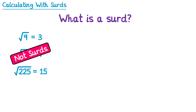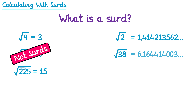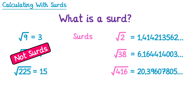If you did the square root of 2, however, you get this infinitely long decimal. The square root of 38 and the square root of 416 also come out as decimals like this, because the number inside the square root isn't a square number. These numbers are examples of surds.